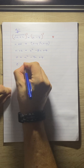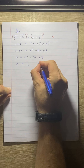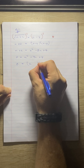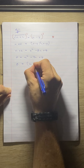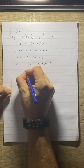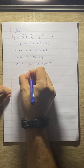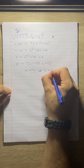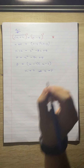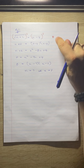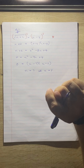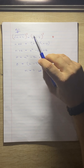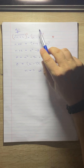We can now factorize this and solve. x is equal to 7 or x is equal to 2. The reason I put a star up here is we need to check our solutions. The reason why is because we squared both sides.